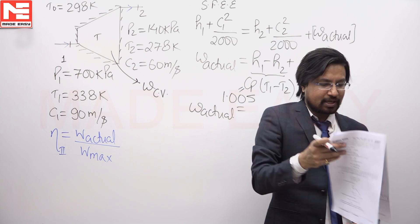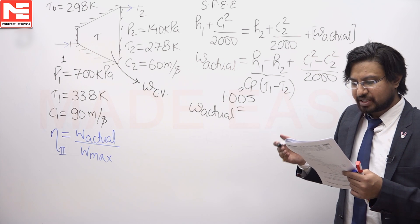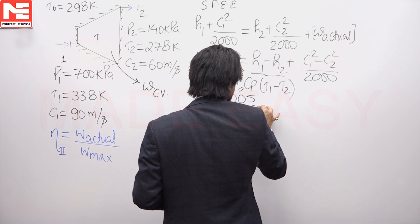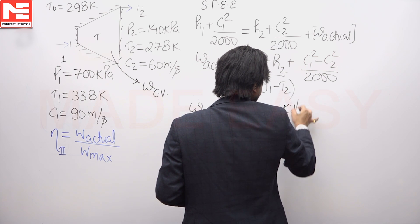The actual work comes out to be 62.25 kilojoule per kg.